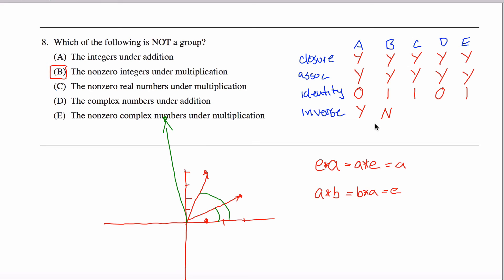Eight is not special — this will be true for any element in set B other than the identity element itself; no inverse will exist. Moving on to show why the remaining sets do satisfy the inverse axiom: for the non-zero real numbers under multiplication, the reciprocal of any element works. Start with any number — just take its reciprocal. One-eighth, one over pi, one over root two, negative one-seventeenth all work. Yes for C.